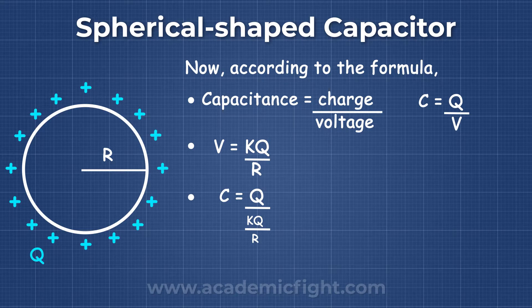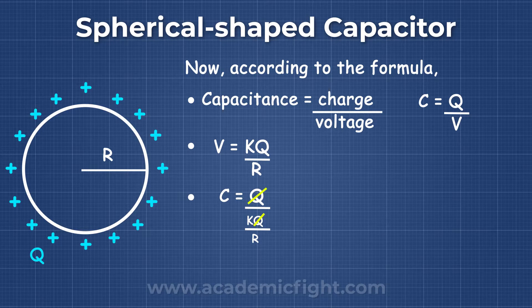C is equal to Q by KQ by R. Q cancels each other, and we get C is equal to R by K.